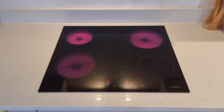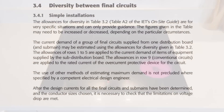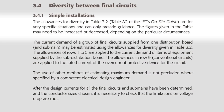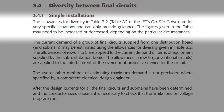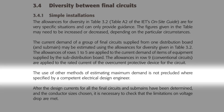We can apply these principles to all circuits in this installation by looking at Table 3.2. There is a stark reminder about using this table in section 3.4.1, which states: the allowances for diversity in Table 3.2 are for very specific situations and can only provide guidance. The figures given in the table may need to be increased or decreased depending on the particular circumstance. It's your responsibility to assess whether it's appropriate to use the method outlined in this table.